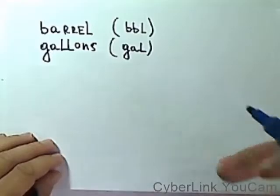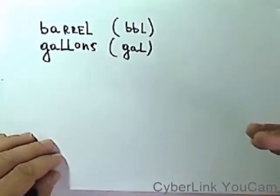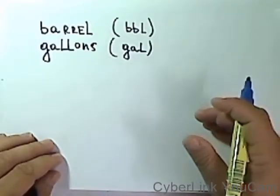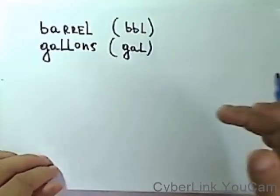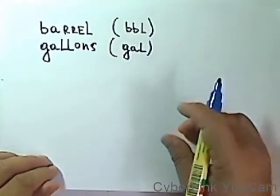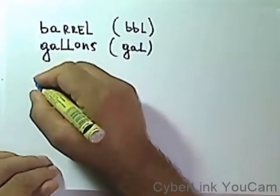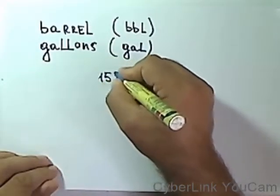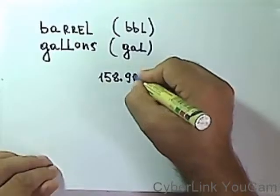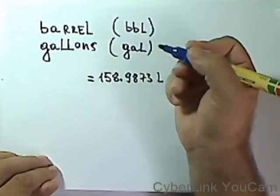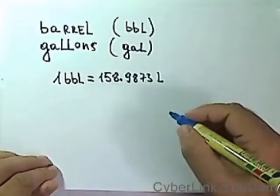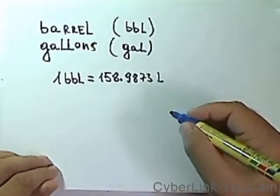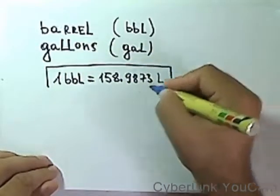Barrel is a unit of volume. Barrel is a barrel. They took a barrel and filled it, and found that in this barrel fits exactly 158.9873 liters of oil. So the definition of barrel is written like this: 1 barrel equals 158.9873 liters. That's what we know.